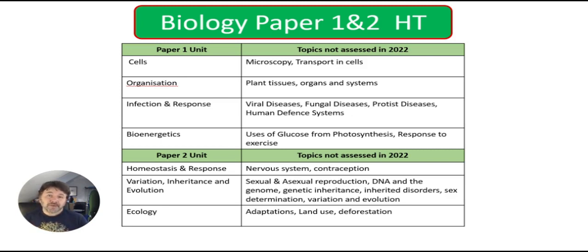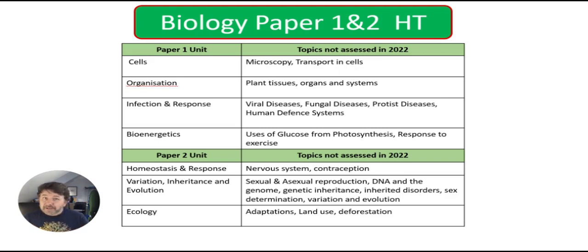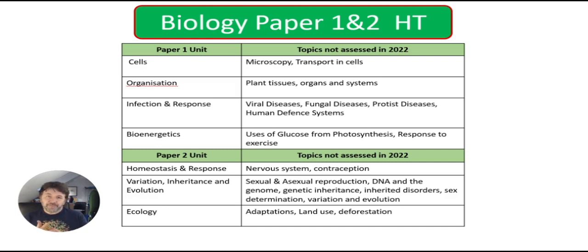Paper two: homeostasis and response — nothing on the nervous system and nothing on contraception. Variation, inheritance and evolution — quite a large amount was not in the paper. Particularly things like genetic inheritance, sexual and asexual reproduction, inherited disorders — polydactyly and cystic fibrosis — sex determination, variation, and the theory of evolution and natural selection by Charles Darwin. And then ecology: nothing on adaptations, nothing on land use, and nothing on deforestation. So definitely include those topics in your revision.